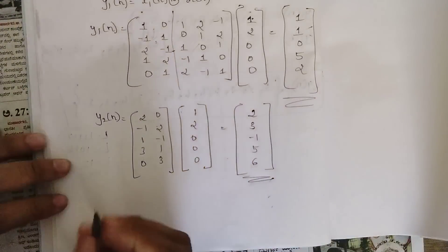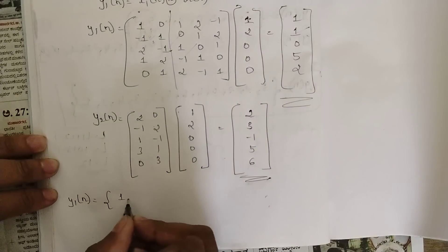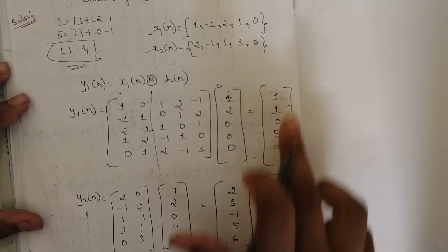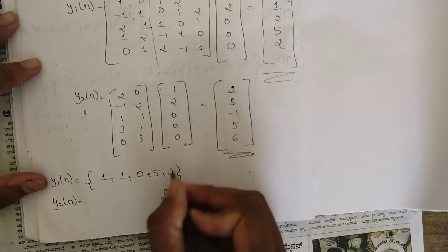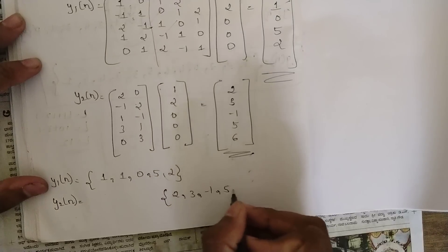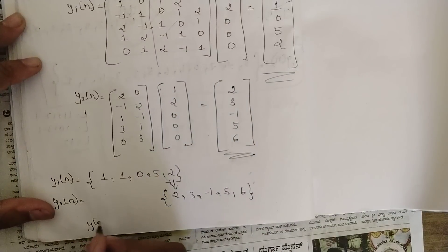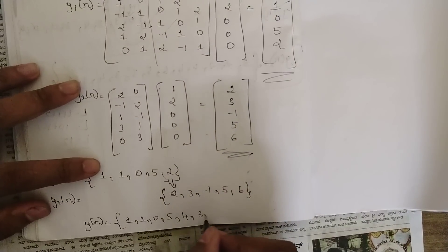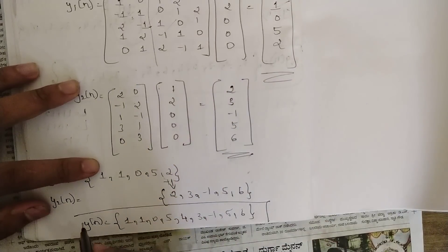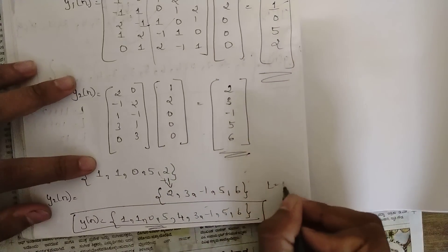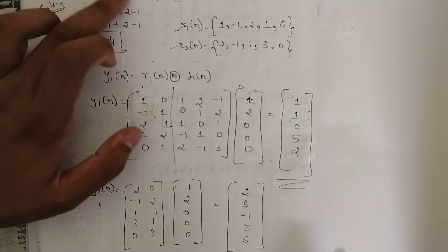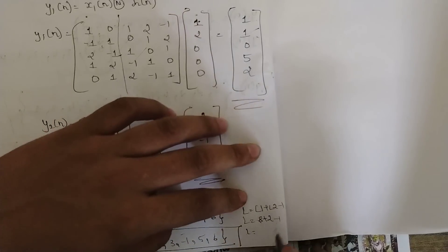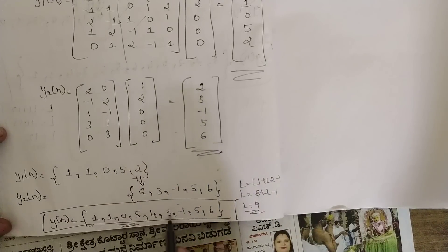For the overlap-add final step: write y1(n) = {1,1,0,5,2}, then align y2(n) = {2,3,-1,5,6} shifted by one position (one zero was appended). The last one value of y1(n) overlaps with the first value of y2(n): 2+2=4. Final answer: y(n) = {1,1,0,5,4,3,-1,5,6}. Verify: L = 8 + 2 - 1 = 9. Count: 1,2,3,4,5,6,7,8,9 — confirmed.